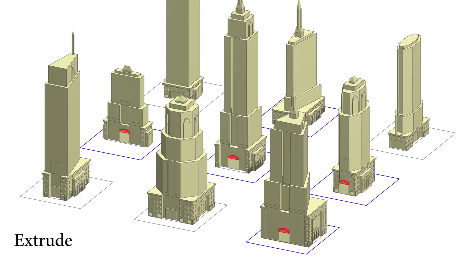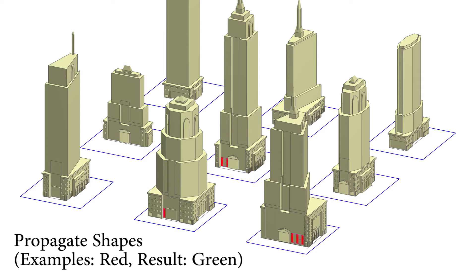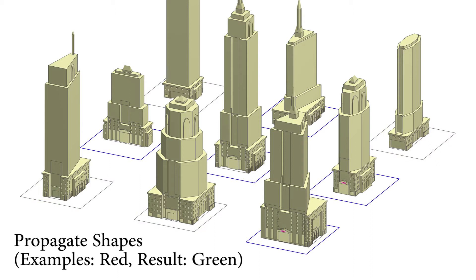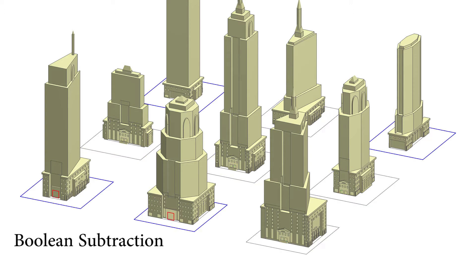Propagated shapes can be extruded to create more interesting objects. Boolean union and subtraction are also supported by our framework. We show more examples of these operations later in this video.